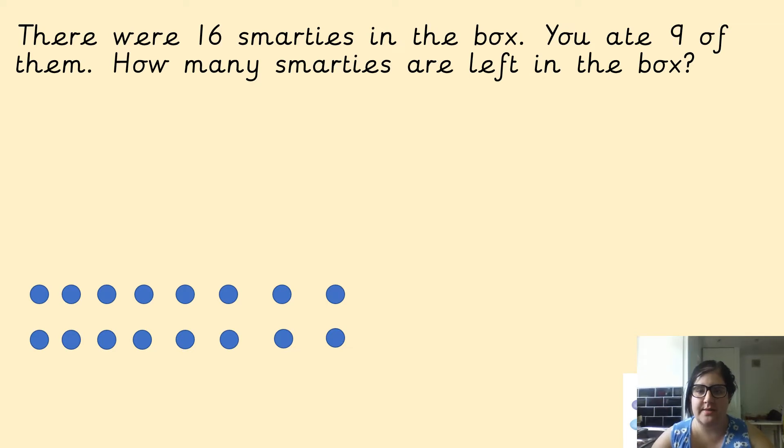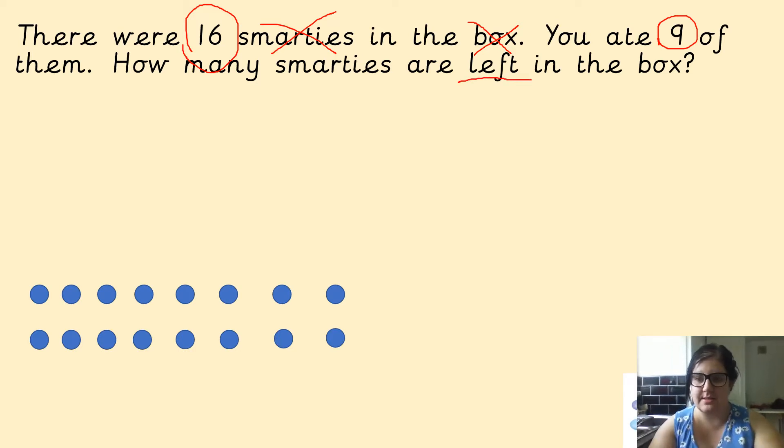So there were 16 smarties in the box. You ate nine of them. How many smarties are left in the box? It does not matter that they are smarties. It does not matter that there is a box. All that matters is the numbers. So 16 and 9 and the question. How many are left in the box? That tells you it is a subtraction.